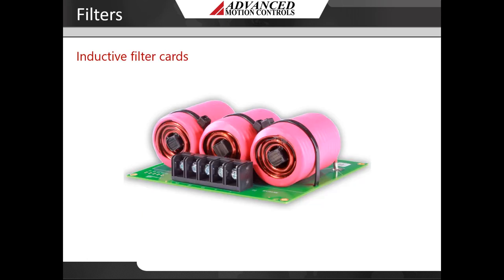Inductive filter cords are added in series with the motor and are used to increase the load inductance in order to meet the minimum requirement of the drive. They also serve to counteract the effects of line capacitance found in long cable runs and in high voltage systems. These filter cords also have the added benefit of reducing the amount of PWM noise that couples onto the signal lines. Higher current spikes on the drive outputs generate higher noise, and with extra inductance added to the system, filter cords help with reducing these current spikes.